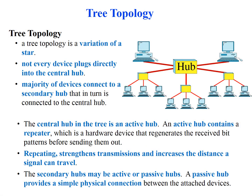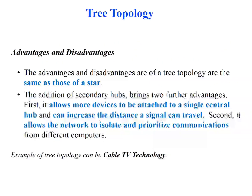Active hubs are equipped with repeaters to strengthen signals and increase the distance they can travel. The advantages and disadvantages of tree topology remain the same as those of star topology. However, the introduction of secondary hubs adds two further advantages: it allows more devices to be connected to the network, increases the signal distance, and allows the network to prioritize and isolate communications from different devices. An example of tree topology is a cable television network.